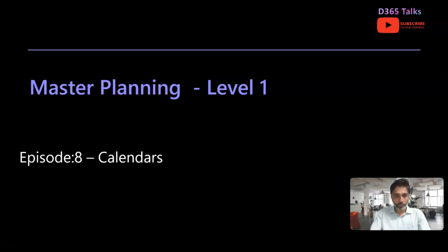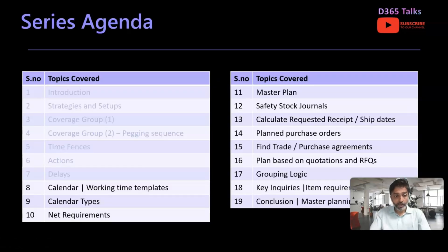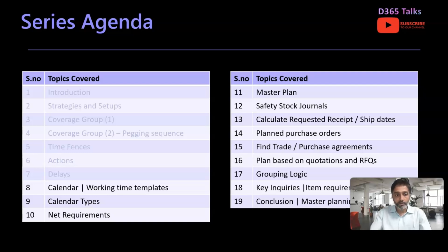This is going to be a very short video. We will not be discussing in detail about calendars as a concept, but as we progress in this master planning series, you need to be aware of what is the purpose of having calendars and working time templates. You can configure those as the standard calendars, and in episode 9 we will discuss about calendar types — vendor calendars, transport calendars, and various calendars — and how these impact calculating your shipping and receipt dates. We already discussed this in our earlier production control module series; please feel free to check that out.